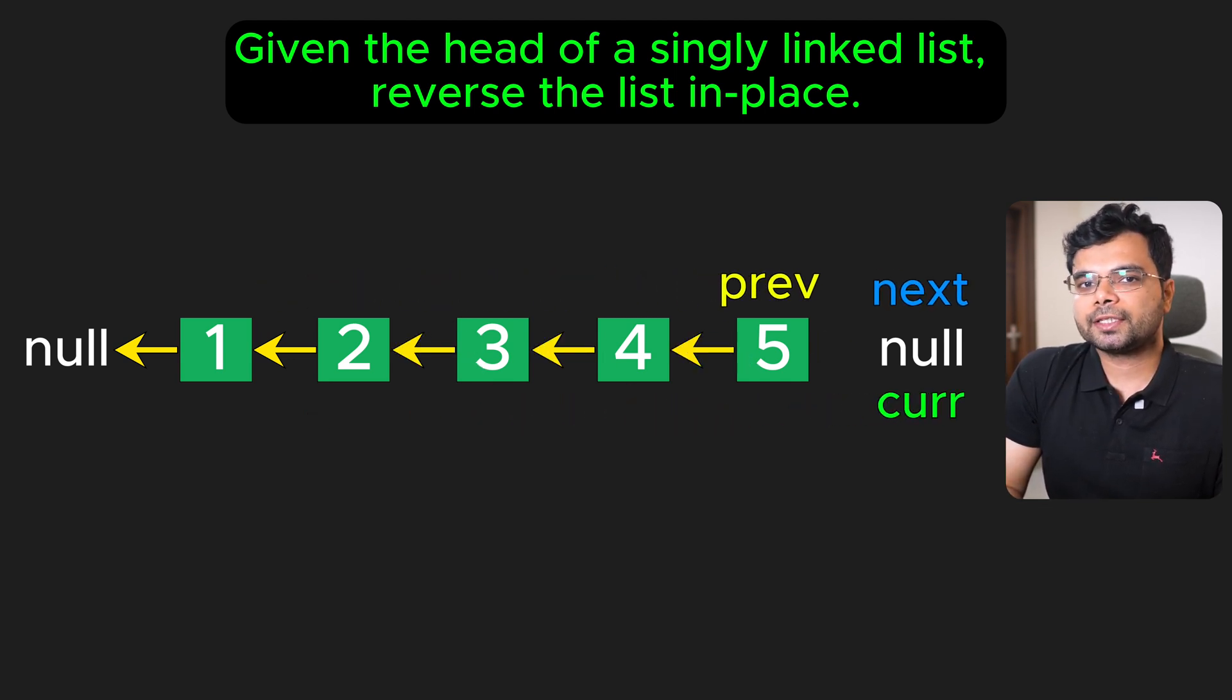Once current becomes null, which means we have reached the end of the list, previous will point to the new head of the reversed list. Using this approach,